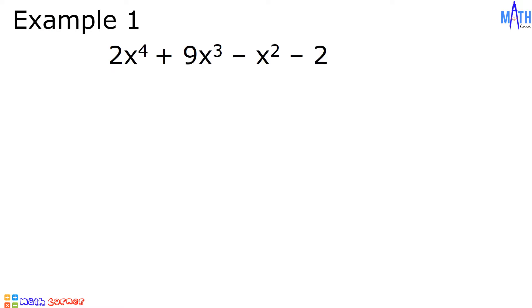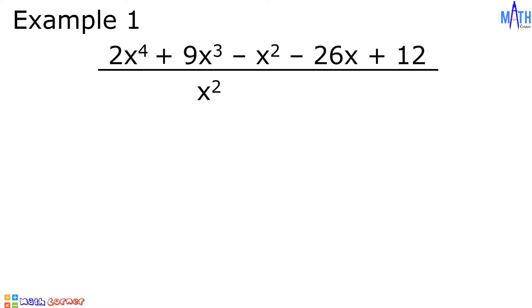Example number 1: 2x⁴ plus 9x³ minus x² minus 26x plus 12, divided by x² plus 2x minus 4. We need to express the polynomials in standard form. Since the dividend and the divisor are already written in standard form, let us write the coefficients of the dividend. If there are any missing terms, we will write 0 as the coefficient.